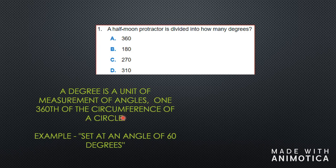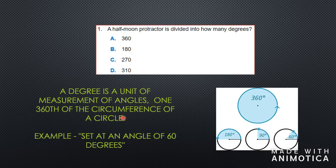If you wanted to draw an angle of 60 degrees, you will take a portion of a circle, because the circle is a full 360 degrees. If you want a 60-degree angle, you will go from zero and count to the mark that says 60.